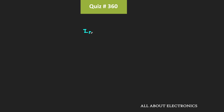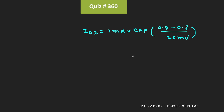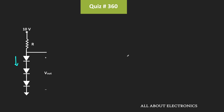Id2 = 1mA times e to the power ((0.8V - 0.7V) / 25mV). Calculating this gives Id2 ≈ 54.59mA. That means whenever the current through the diode is equal to 54.59mA, the drop across each diode is 0.8V, and hence the output voltage Vout will be equal to 2.4V.